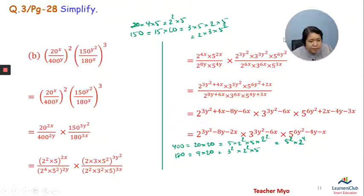Combining the powers of 2: 2 power 6y times 2 power 3y times 2 power 6x. For 5: 5 power 4y times 5 power 6y squared. For 3: 3 power 3y times 3 power 6x. This equals 2 power 7 plus 4x minus 8y minus 2x, times 3 power 3y squared minus 6x, times 5 power 6y squared plus 2x minus 4y minus x.